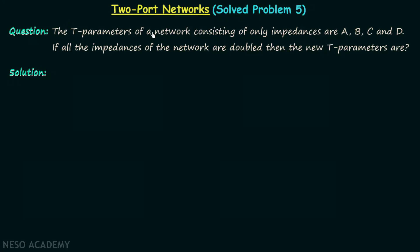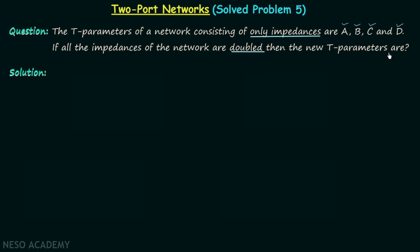The T parameters of a network consisting of only impedances are A, B, C and D. If all the impedances of the network are doubled, then what are the new T parameters?